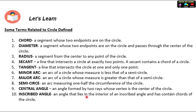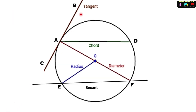An inscribed angle is an angle that lies in the interior of the circle. You can go over these with your learning activity sheets as a guide. Let's try the example with the given points. The tangent line is identified in the figure.